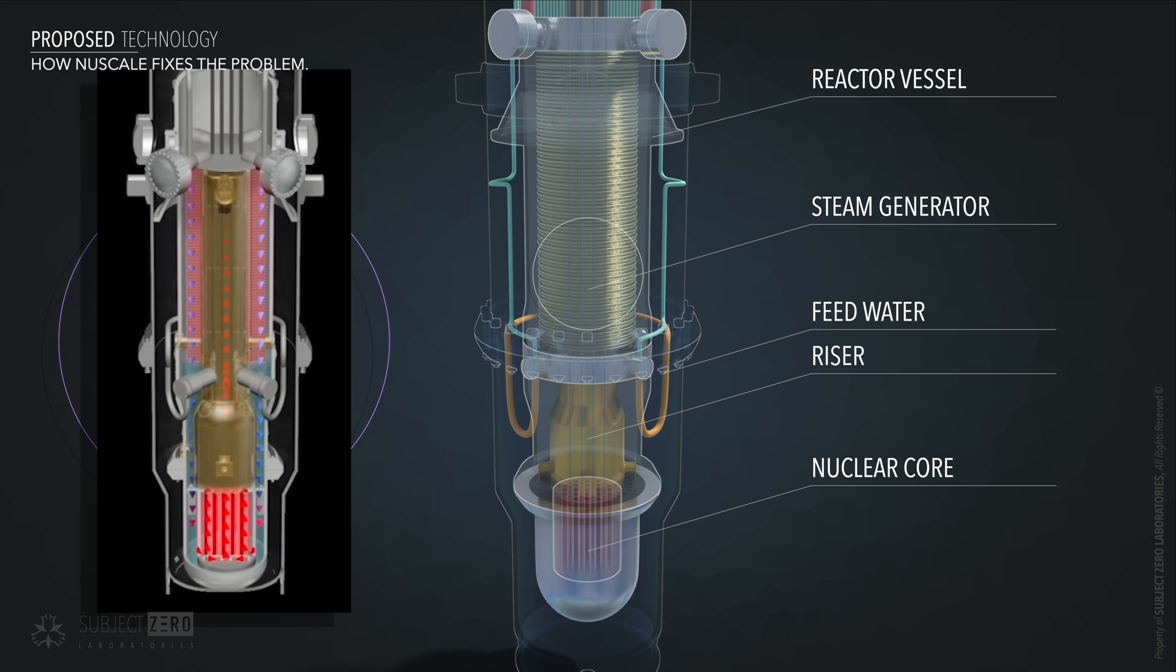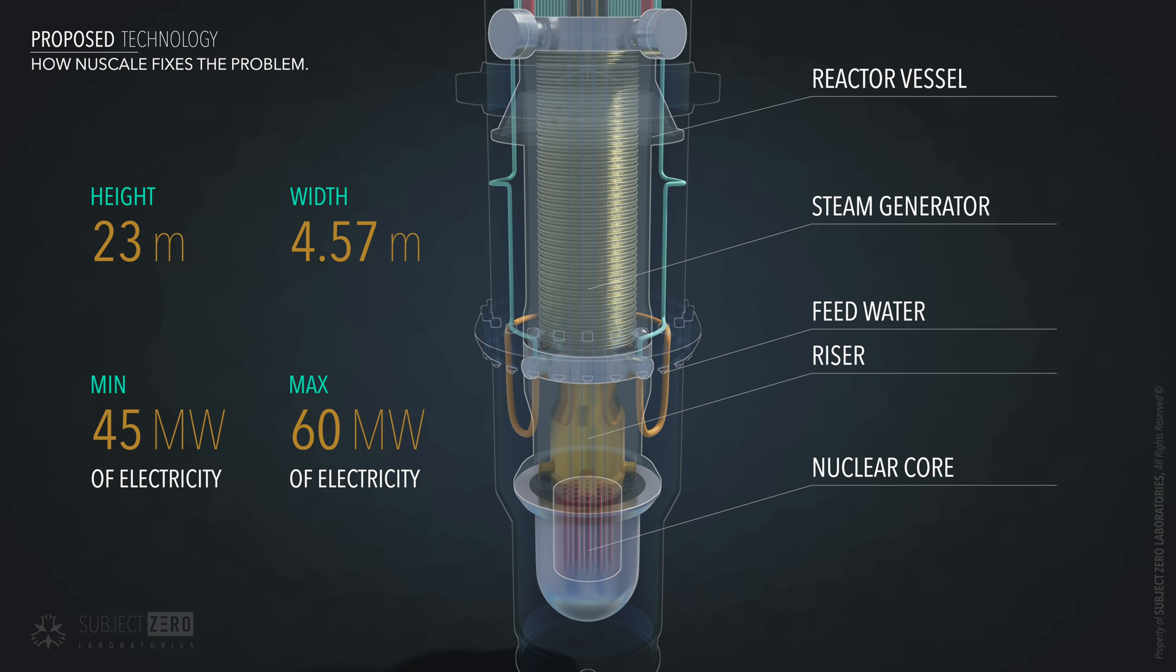Steam generated during this process goes up the pipes all the way to the generator, moving the turbine, producing electricity. The steam is condensed, turned into liquid, and pumped back into the reactor. All of this happens inside a containment vessel that is about 23 meters tall and 4.57 meters wide and can output between 45 and 60 megawatts of electricity.